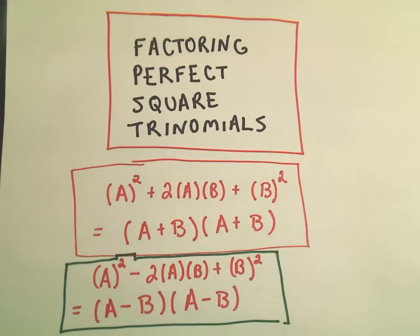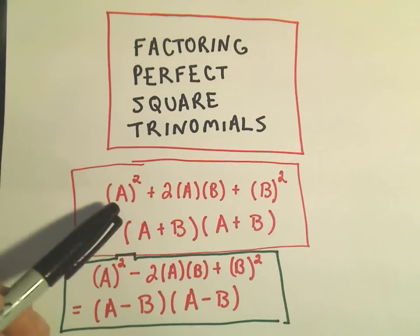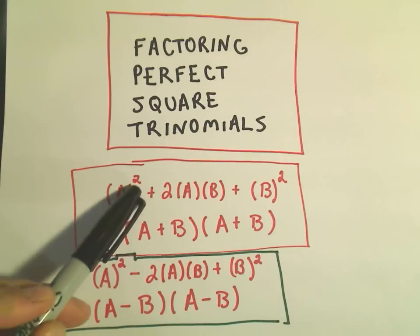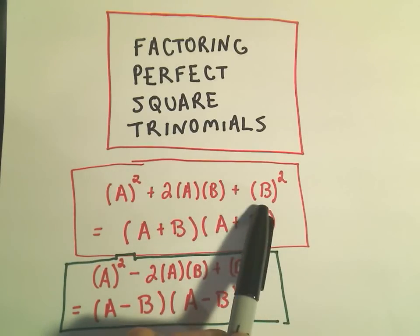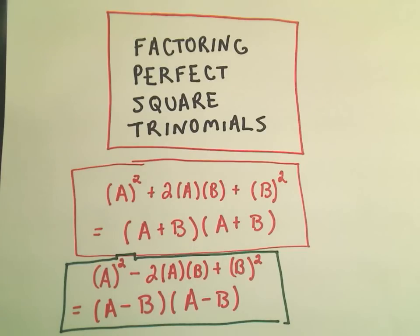Okay, in this video I want to do an example of factoring a perfect square trinomial. I've jotted the two formulas down here at the bottom. If you have something squared, so a squared plus 2 times a times b plus b squared, if you can recognize that that's what's happening, you can actually factor that as a plus b times a plus b.